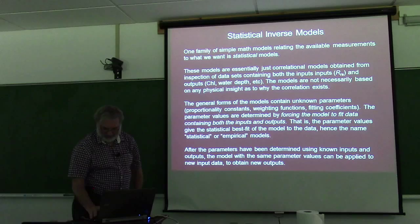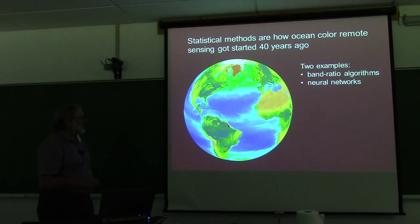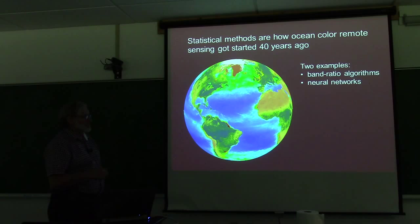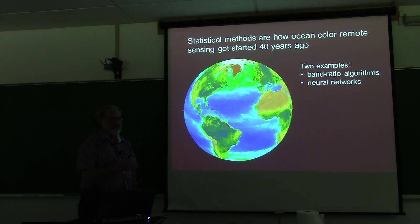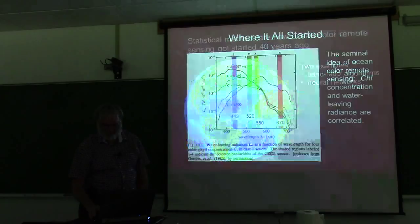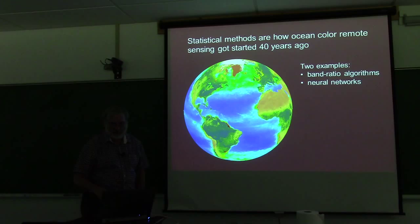That's how this whole business got started in the days of CZCS, and you get some really useful and pretty pictures with very simple methods. I'm going to look at two examples of statistical methods: band ratio algorithms, which go all the way back to the first days of CZCS and justified building the satellite, and a more recent and fancier technique called neural networks. But they're both really just fancy curve fitting.